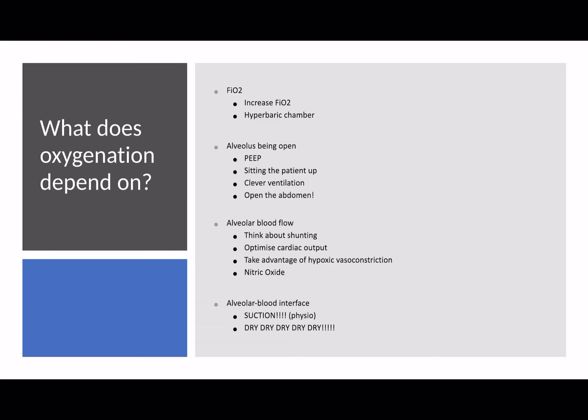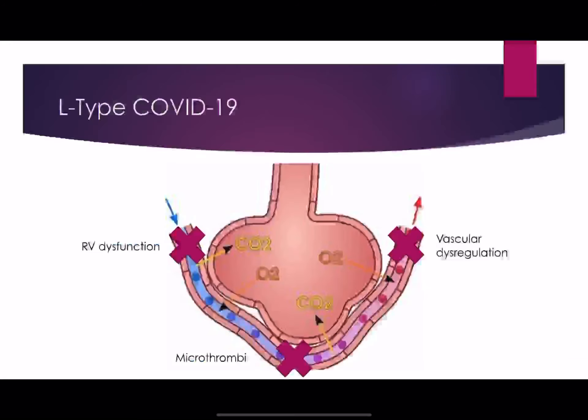We will go through that in more detail in specific videos. There are two different types of COVID-19 and I have a specific video on each of these phenotypes — in this video I'm just going to introduce them. Early COVID seems to have a picture called the L-type, or low-type, COVID-19. Please go and see the specific video on L-type COVID-19 for more information.